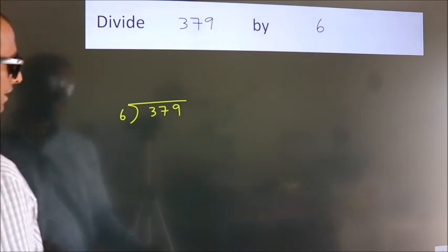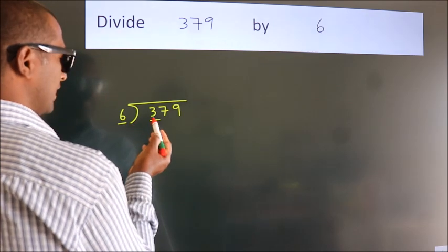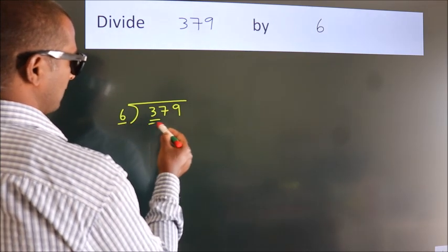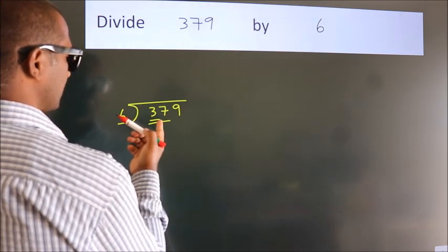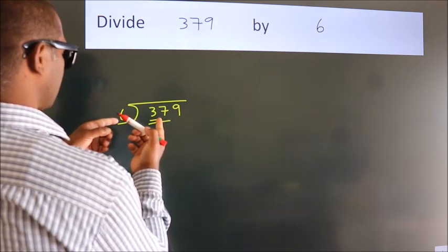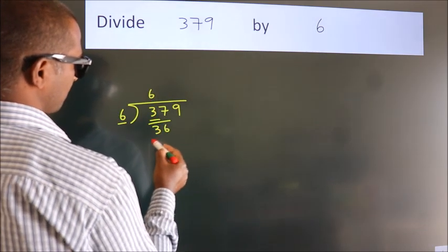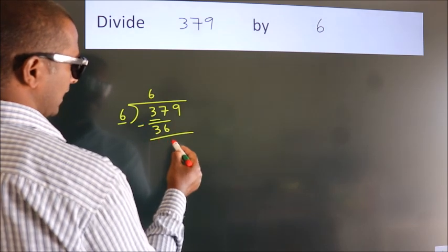Next. Here we have 3, here 6. 3 smaller than 6, so we should take two numbers: 37. A number close to 37 in the 6 table is 6 times 6, which is 36. Now we should subtract. We get 1.